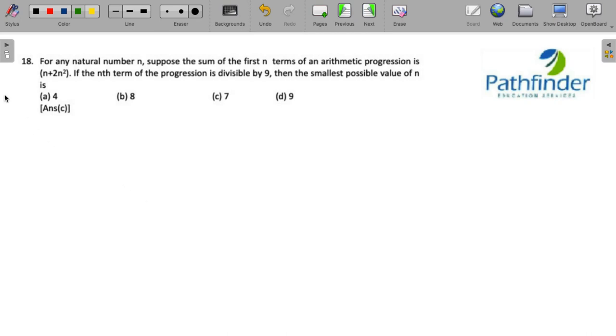CAT 2022 Slot 1 Quantitative Aptitude, Question Number 18. For any natural number n, suppose the sum of the first n terms of an arithmetic progression is n plus 2n squared. If the nth term of the progression is divisible by 9, then the smallest possible value of n is...